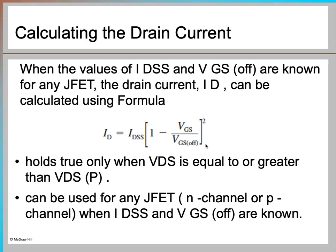When VGS equals zero, whatever your maximum drain current is, that is your IDSS. When the values of IDSS and VGS-off are known for any JFET, the drain current ID can be calculated using the formula. This holds true only when VDS, your drain-to-source voltage, is equal to or greater than VDS-p, where p represents your pinch-off voltage.